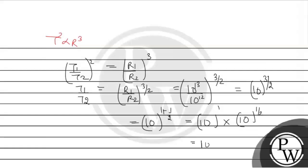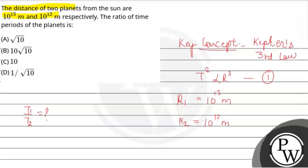Thus, it will get 10 square root of 10. This is a ratio of time period T1 over T2. This is your answer. Option number D is correct. I hope you understood it well. Best of luck for your future.